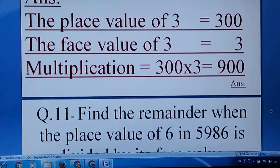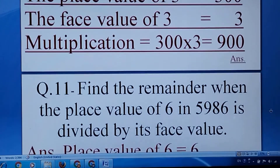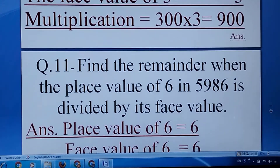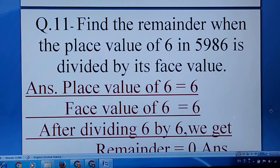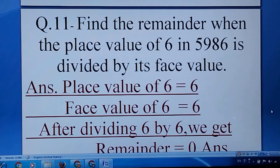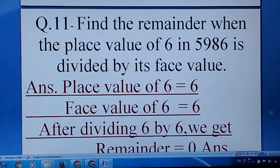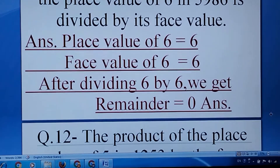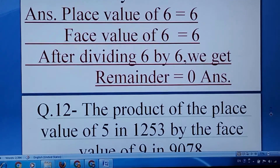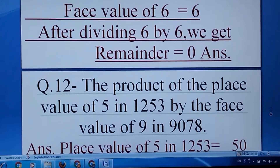Question number eleven: find the remainder when the place value of 6 in 5986 is divided by its face value. First, write the place value of 6, then the face value of 6, then go for division, and then write the remainder.